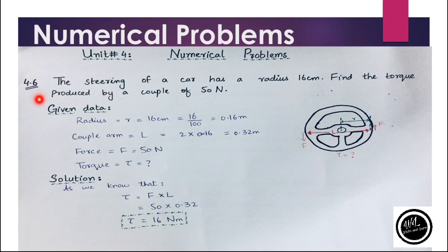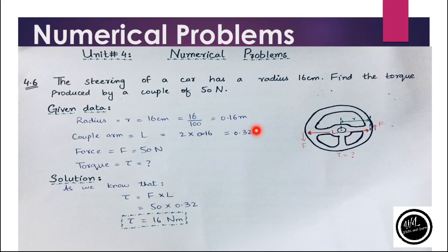Let's start with numerical 4.6. The statement is: the steering of a car has a radius of 16 centimeters. Find the torque that is produced by a couple of 50 Newton. The radius of the steering is represented by R, which is 16 centimeters, and we have to find out the torque.